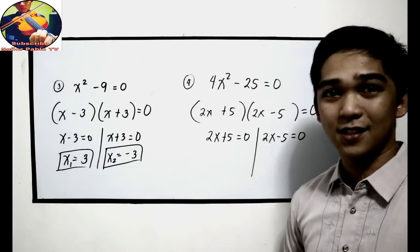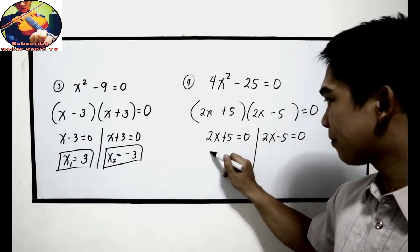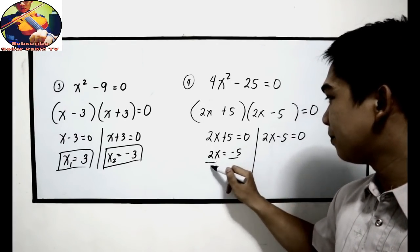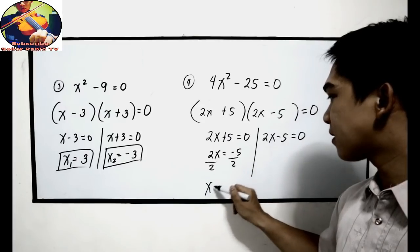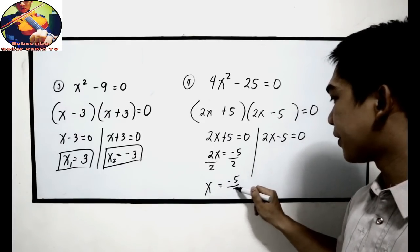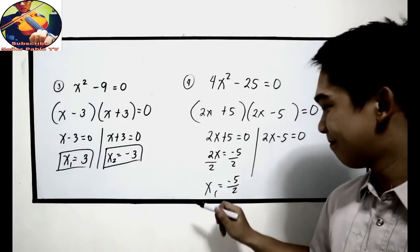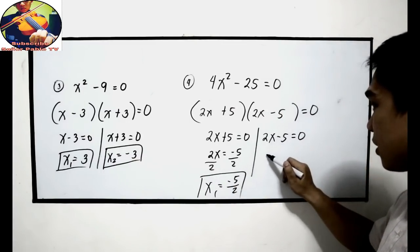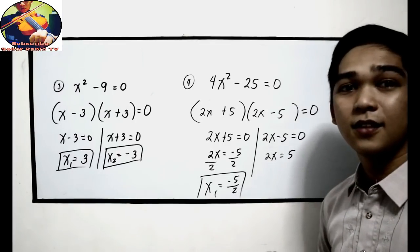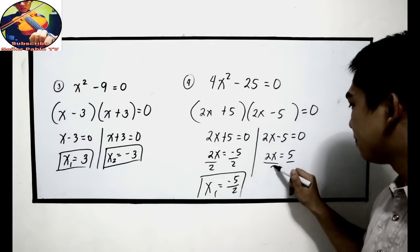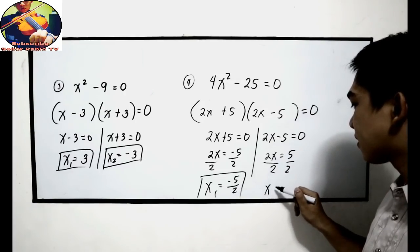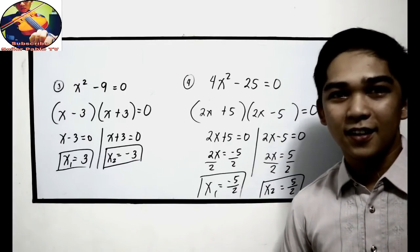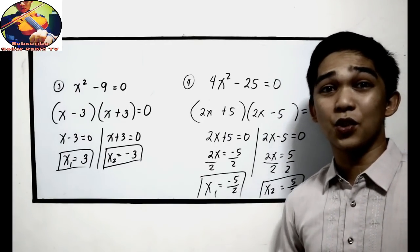Find the values for x. Transpose: 2x is equal to negative 5, divide by 2 — x sub 1 is negative 5 over 2. Next, transpose: 2x is equal to 5, divide by 2 — x sub 2 is 5 over 2. And that is the difference of two squares.